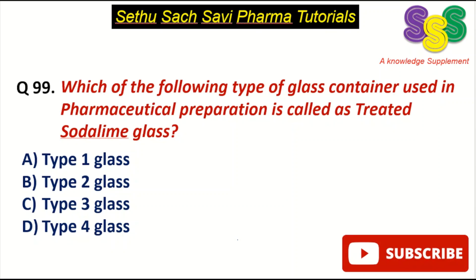Today's question is: which of the following types of glass containers used in pharmaceutical preparation is called treated soda lime glass? A: Type 1 glass, B: Type 2 glass, C: Type 3 glass, D: Type 4 glass.